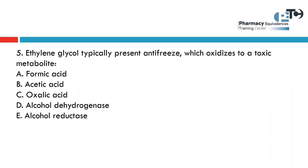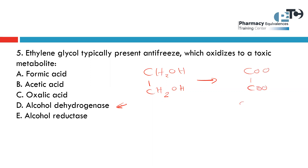Ethylene glycol is typically present in antifreeze. If ingested, it will cause toxicity due to the toxic metabolite that forms. It is an alcohol, so after oxidation with alcohol dehydrogenase — the enzyme that metabolizes ethylene glycol — it is converted into an aldehyde, then an acid. After oxidation in two steps, you get the acid, which is oxalic acid. So the answer is oxalic acid.